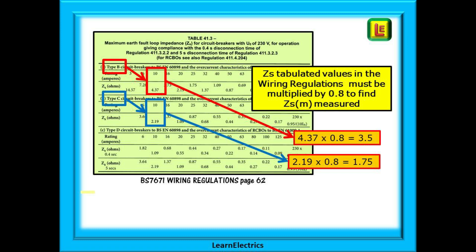The values are called tabulated values. They have come from these tables shown here. But we need measured values, something to compare our test meter measurements against. So we must then multiply these values by 0.8 to arrive at the measured values. As shown 4.37 times 0.8 is 3.5 ohms and 2.19 times 0.8 is 1.75 ohms.